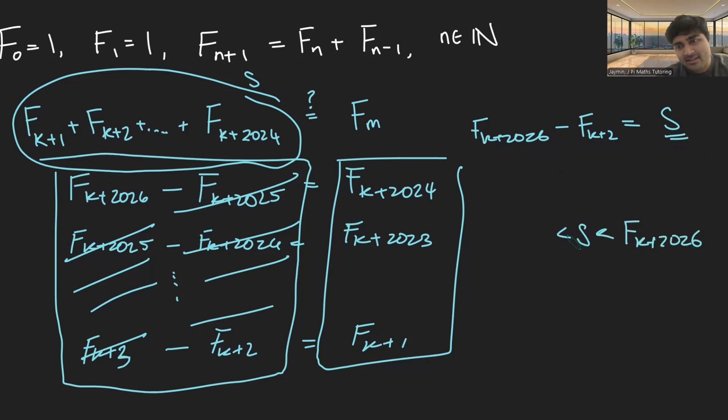But of course, S includes F_k+2024 plus F_k+2023. And so therefore, it's got to be bigger than F_k+2025. So this total is sandwiched between two consecutive Fibonacci numbers. And so therefore itself cannot be a Fibonacci number. So a pretty cool proof. I think it's quite interesting.